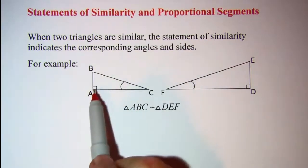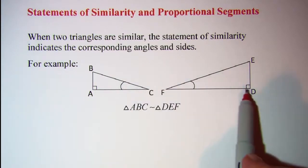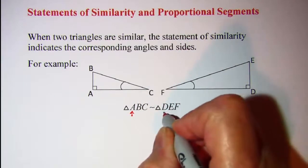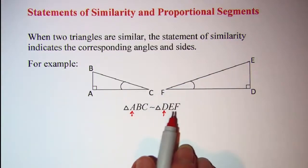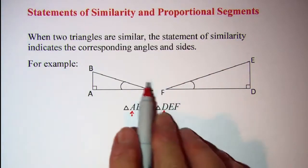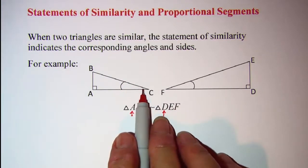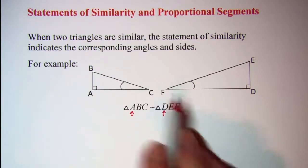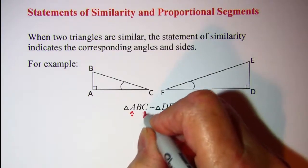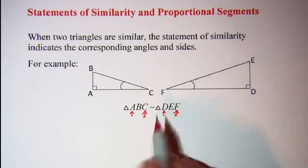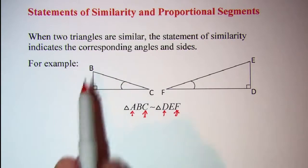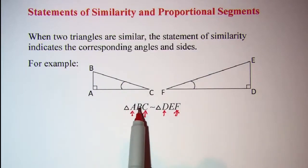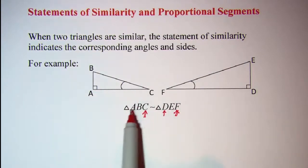For example, we can see that angle A and angle D correspond, so angle A and angle D have to line up in the statement of similarity. Also, angle C and angle F each have one arc, so those angles correspond, and C and F are in the same position in the similarity statement. Angle B and angle E are not marked, so those two are in the corresponding middle positions.